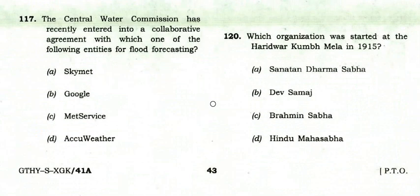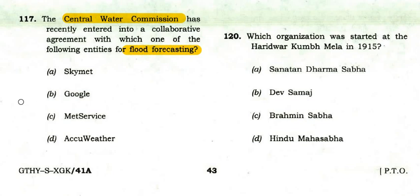The Central Water Commission (CWC) has recently entered into a collaborative agreement with which entity for Flood Forecasting? Options: SkyMet, Google, MetService, AccuWeather. The right option is Google — the Central Water Commission entered into a collaborative agreement with Google for Flood Forecasting.